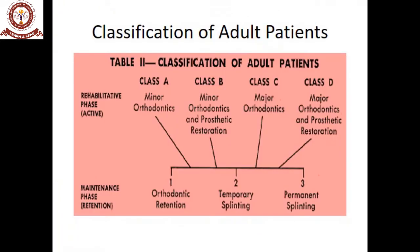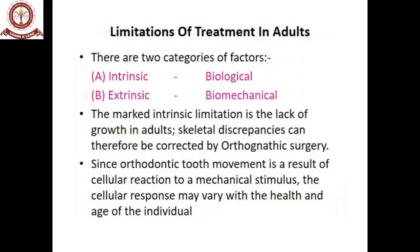You can classify adult patients into Class A, who require minor orthodontics; Class B, who require minor orthodontics and prosthetic restoration; Class C, who require major orthodontics; and Class D, who require major orthodontics and prosthetic restorations. All these patients undergo a rehabilitative or active phase, followed by a maintenance phase involving orthodontic retention, temporary splinting, or permanent splinting.